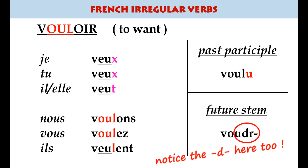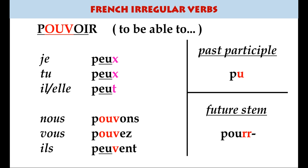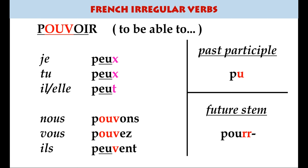From the same group, pouvoir means to be able to or can. Je peux, tu peux, il peut, nous pouvons, vous pouvez, ils peuvent. Notice also that the future stem has a double r.